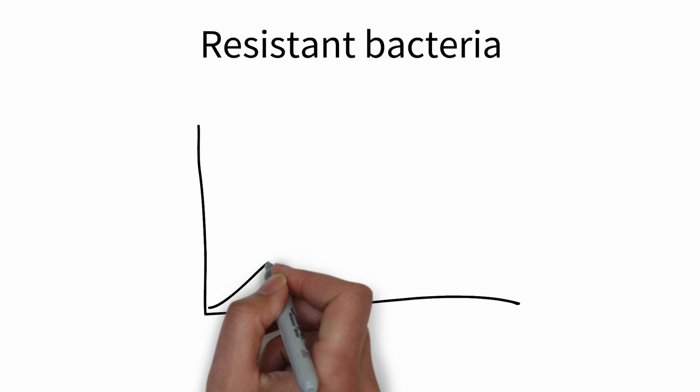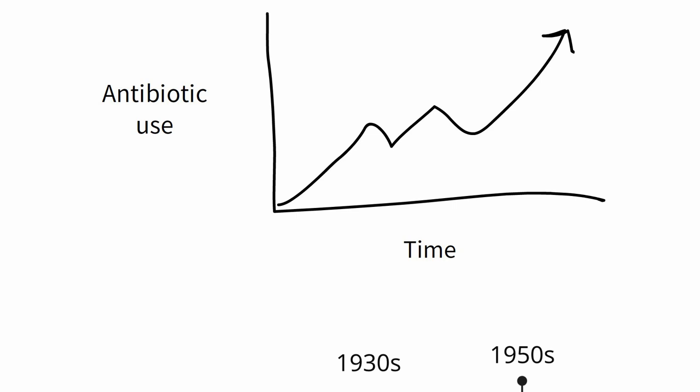In time, the organisms developed a certain amount of resistance, and new and stronger sulfonamides and antibiotics had to be produced.